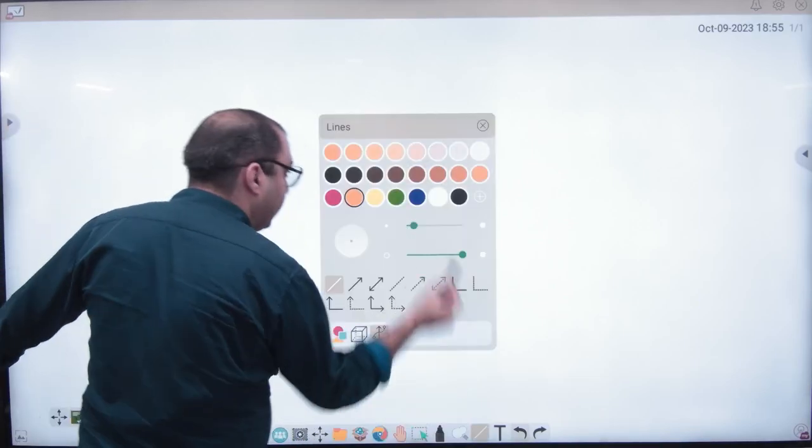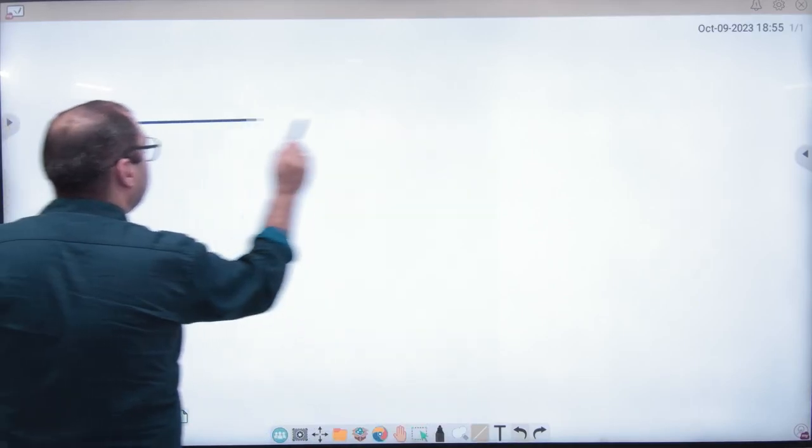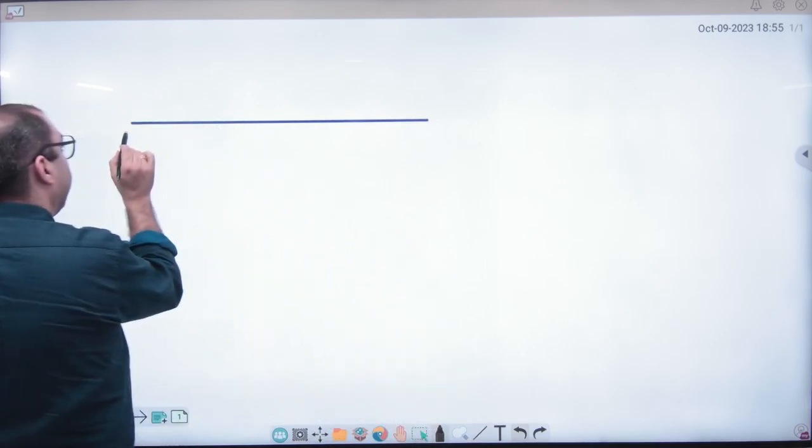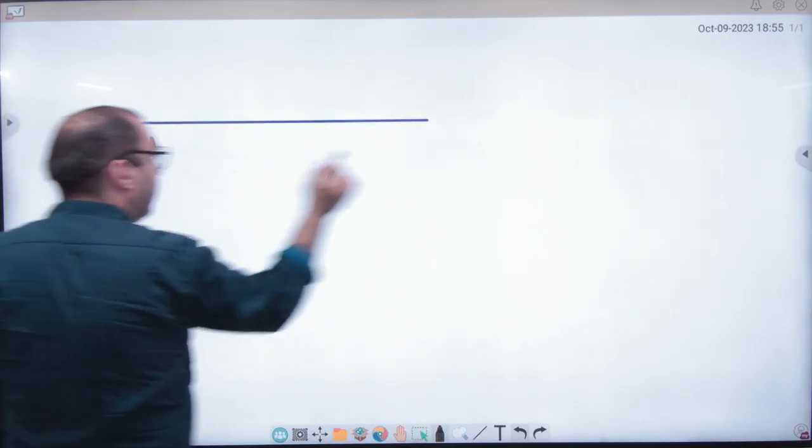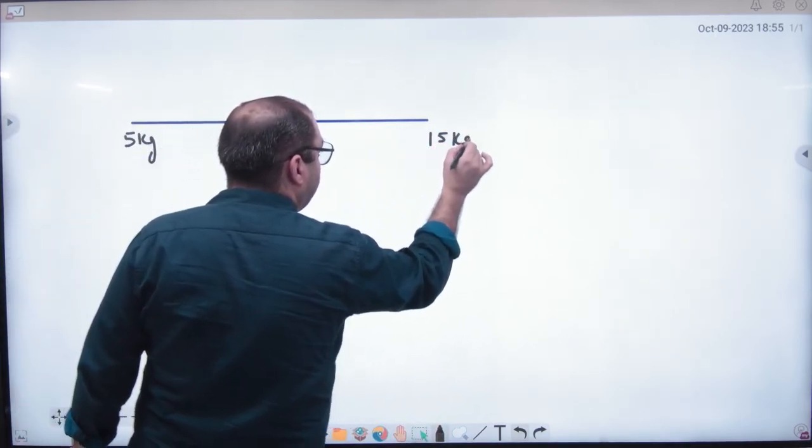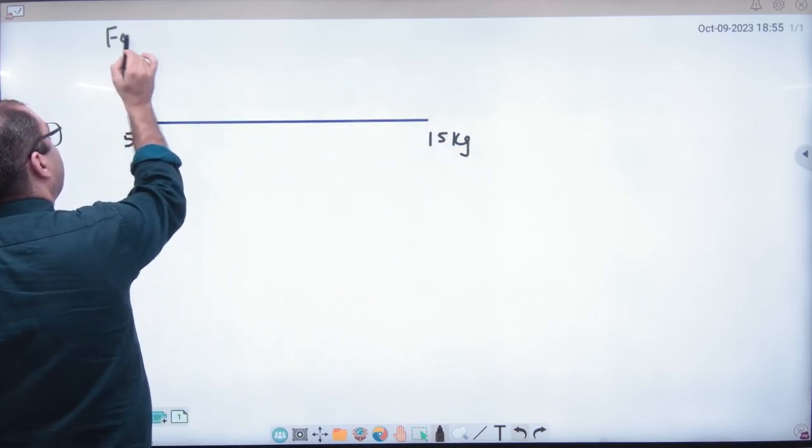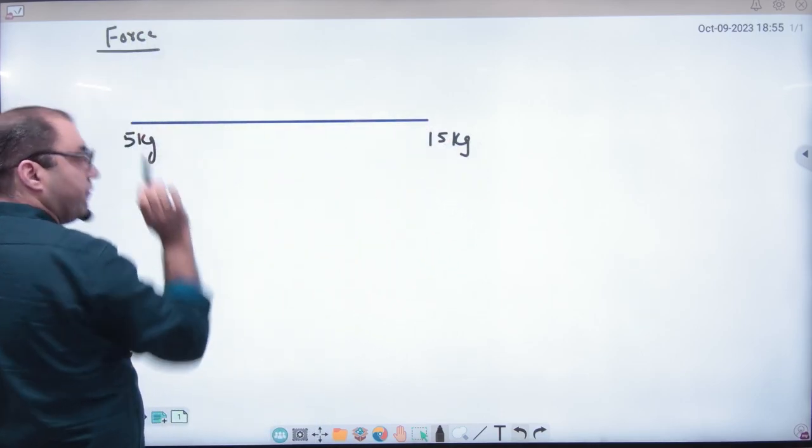You have given the question that there are two masses, one is 5 kg, one is 15 kg. I am going to take an example first.